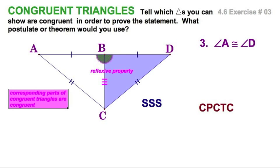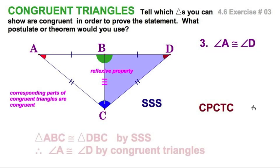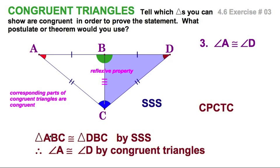Therefore, each of their corresponding parts — the green angles, the blue angles, and the red angles — are congruent. These are the pieces we're looking for, as I want to prove that angle A is congruent to angle D. Those two angles are congruent since triangles ABC and DBC are congruent by side-side-side. Therefore, all their corresponding parts, in this case angles A and D, are congruent.